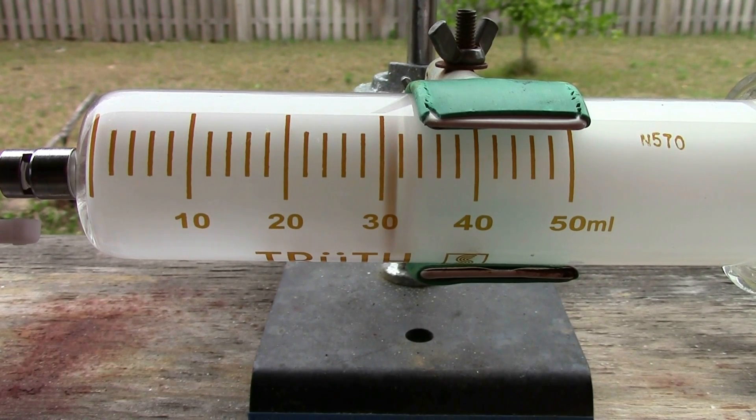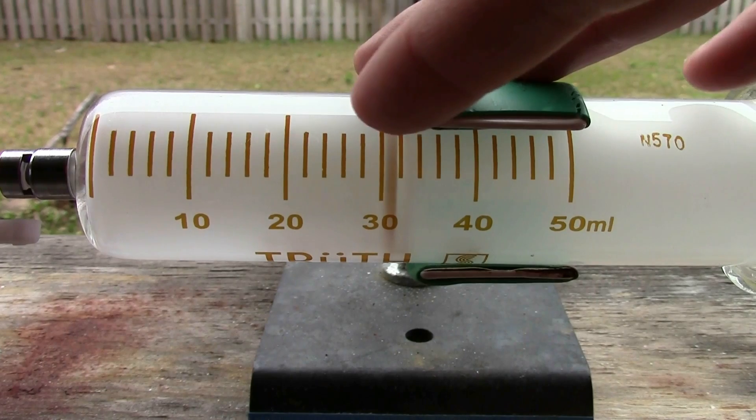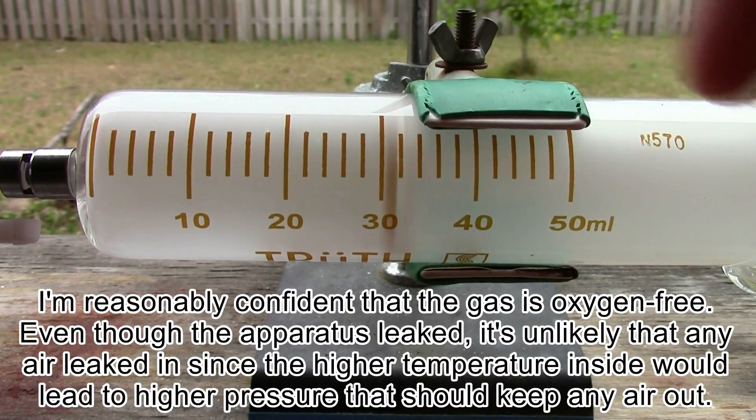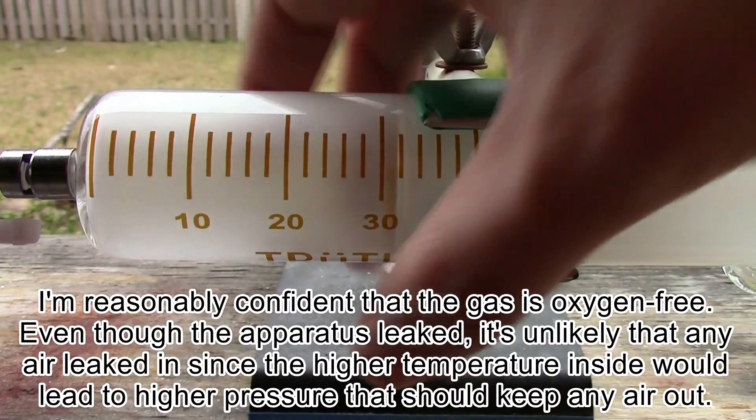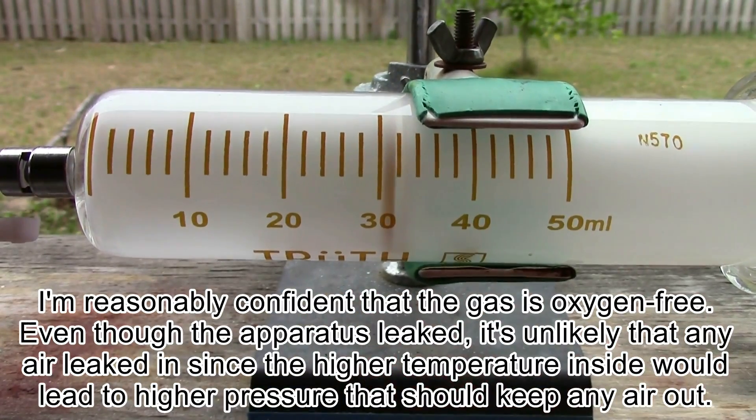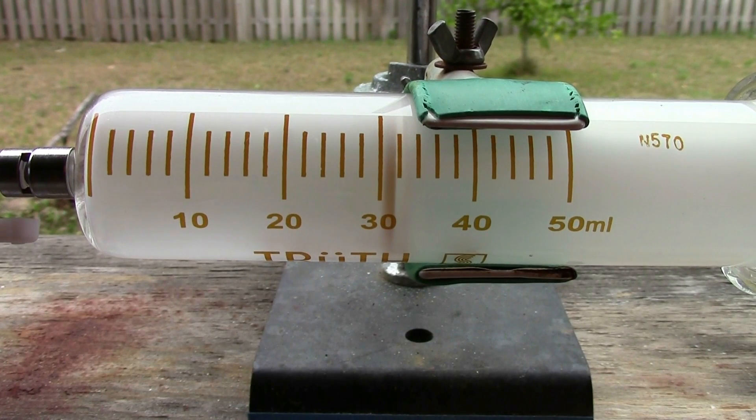This gas should now be free from oxygen and is relatively pure helium ready for ampouling. When you ampule this, you'd want to have the ampule upside down and tilt this thing up and dispense the helium upward. Ampouling samples is kind of important for element collections, so I think I'm going to make a separate video on that because there's some intricacies to it that would make this video very long.